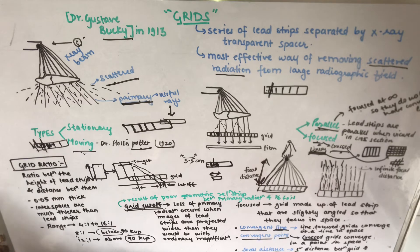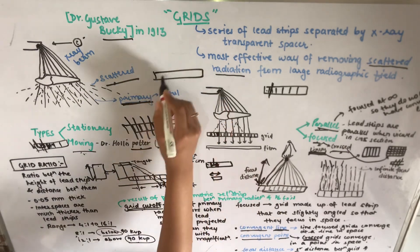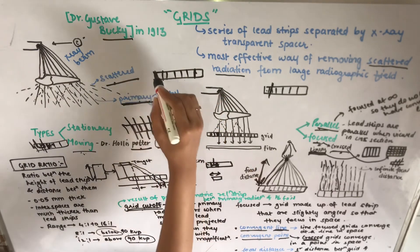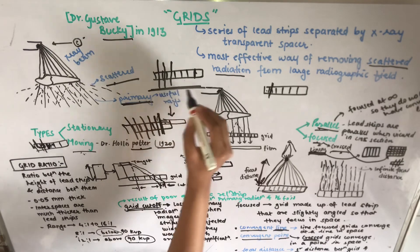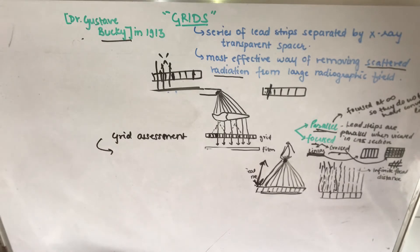To summarize: many scattered radiations arise when the x-ray beam hits the patient and they travel in multiple directions. Only those rays traveling in the direction of the transparent spacer can reach the film, while rays scattered at different angles are absorbed by the lead strips of the grid.